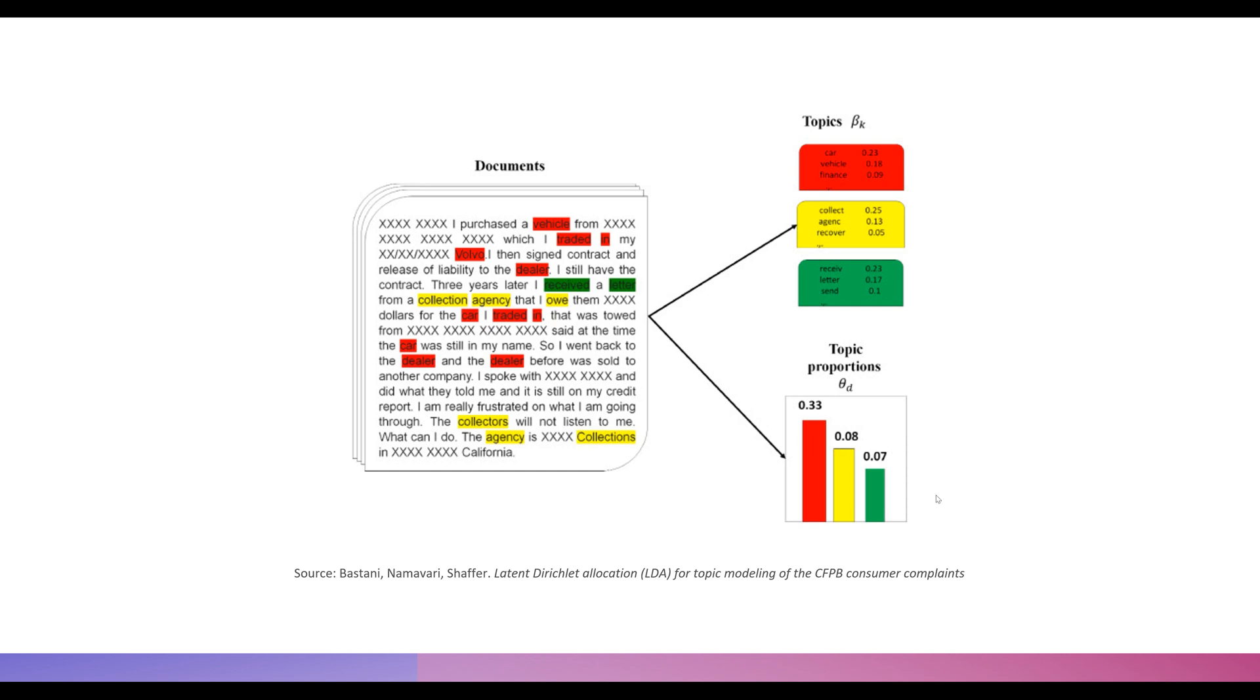It comes down to essentially the same concept as TF-IDF and k-means, but more complex because text can have multiple layers or proportions of topics.